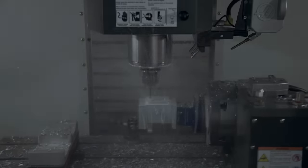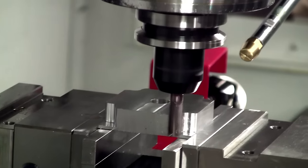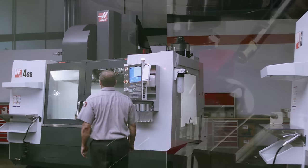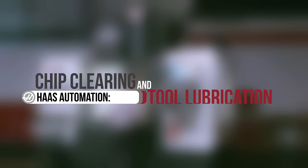One of the primary challenges in machining is keeping the tool lubricated and chips out of the cutting zone. Let's look at all the ways Haas vertical machining centers tackle chip clearing and tool lubrication issues.